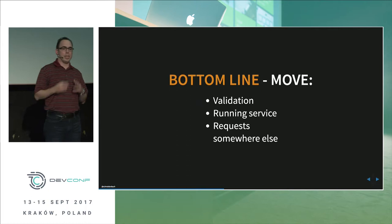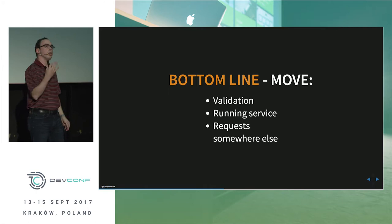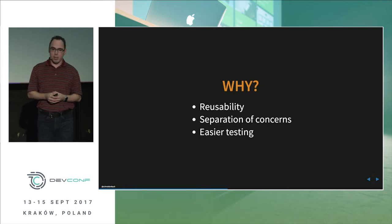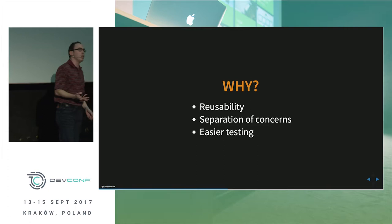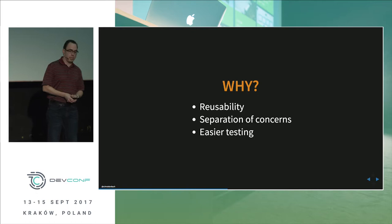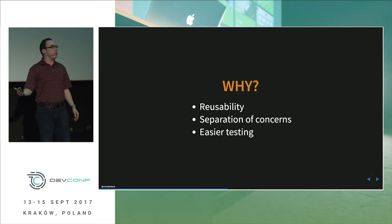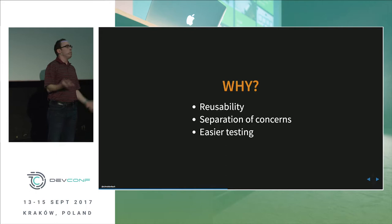We need to talk about the Command Query Responsibility Segregation pattern, which essentially says requests are made, something processes those requests, and then data is returned — it just breaks apart the request from the processor. We need to move validation, service execution, and the requests to another part of the application. The benefits include reusability — if you break services into requests and queries, you can reuse them elsewhere, maybe in a WinForms application. You can't always predict how these services will be used.